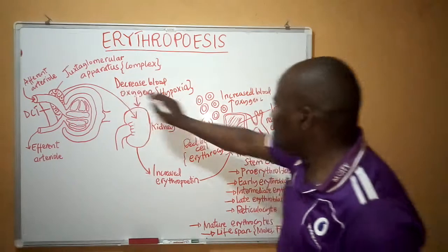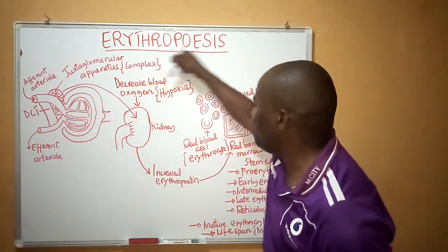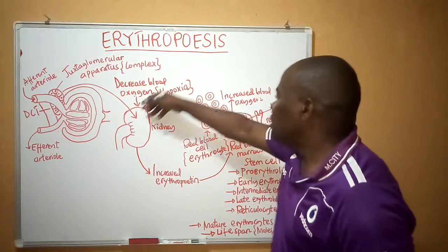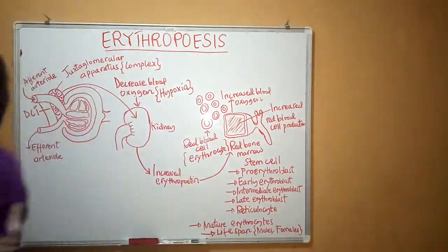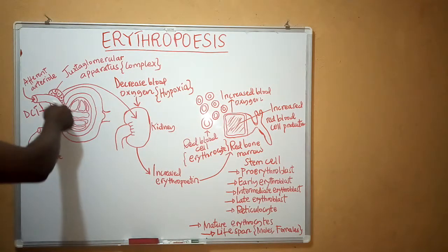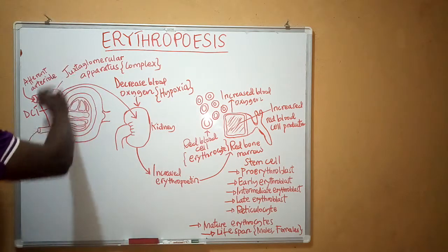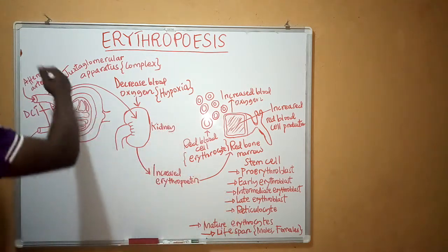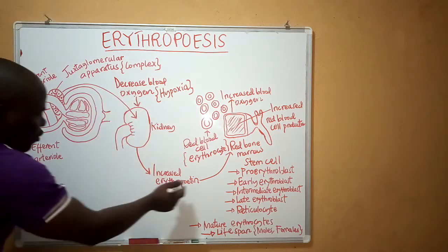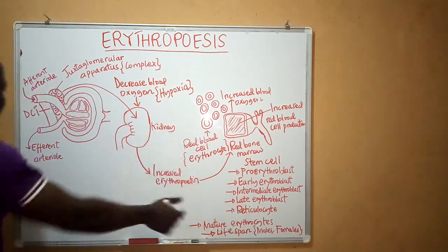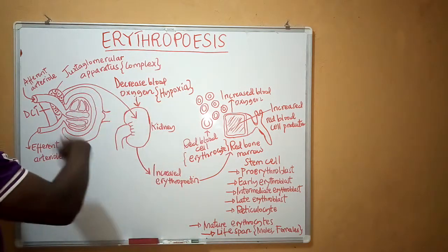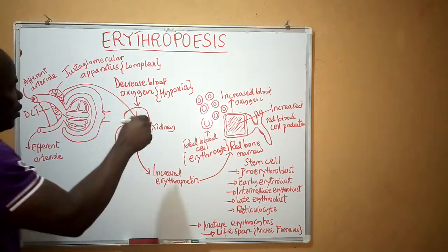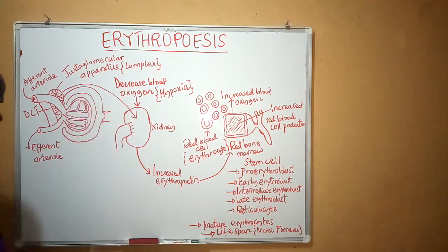After picking up oxygen, the level of oxygen supplied to the kidney will be increased. Once increased, the kidney will release less erythrogenin and decrease the activation of the plasma protein erythropoietinogen, which means erythropoietin will also be decreased. This is a negative feedback mechanism that controls the production of erythrocytes within our bodies.